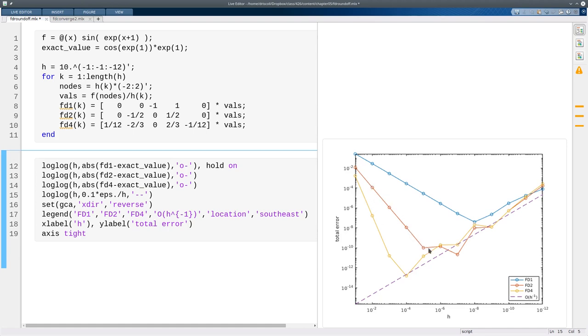The second order method, the optimal h should be occurring at about epsilon to the one-third. So somewhere between five and six. But the accuracy we get is to the two-thirds, the square of that. So ten to the minus tenth.